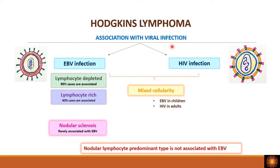The most common viral infections associated with Hodgkin's lymphoma are Epstein-Barr virus (EBV) and HIV. EBV is associated with lymphocyte depleted and lymphocyte rich types. Mixed cellularity is associated with both EBV in children and HIV in the elderly. Nodular sclerosis is rarely associated with viruses. Nodular lymphocyte predominant type is classically not associated with EBV, though recent data suggests three to five percent may show association.